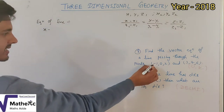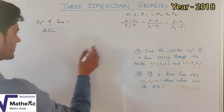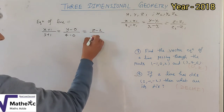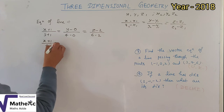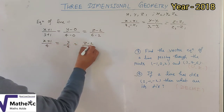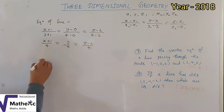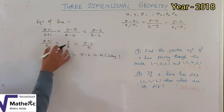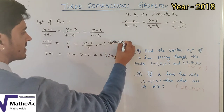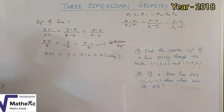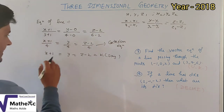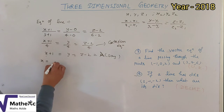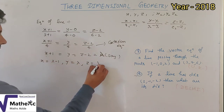Substituting the values: (x + 1)/4 = y/4 = (z − 2)/4. The 4 cancels from all three, giving: x + 1 = y = z − 2. Setting this equal to k (lambda), we get: x = λ − 1, y = λ, z = λ + 2. This is the Cartesian (symmetric) equation of the line.